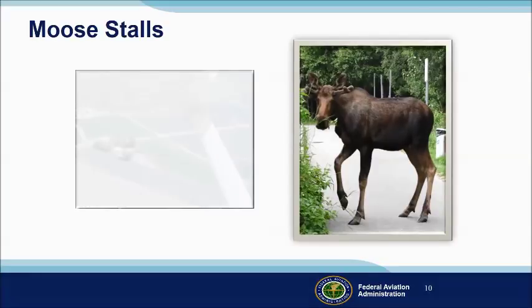So for a few unprepared pilots, the first time they get to practice stalls while turning about a point is when they're concentrating on something on the ground. They're called moose stalls in Alaska, coyote stalls in Arizona, and roose stalls in Australia — all so named because they result from low-altitude maneuvering around something of interest on the ground. No matter where you fly, they're to be avoided.